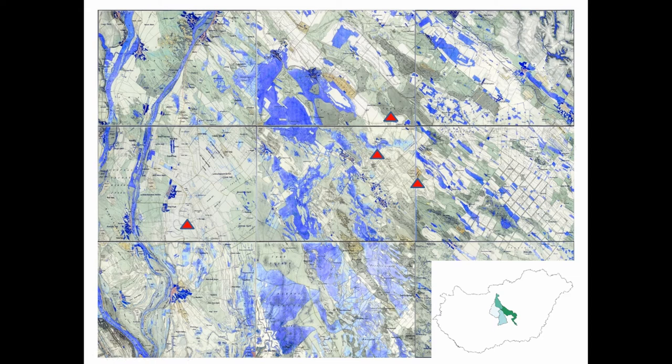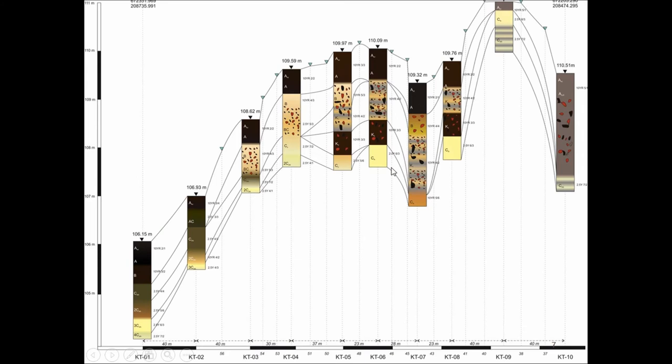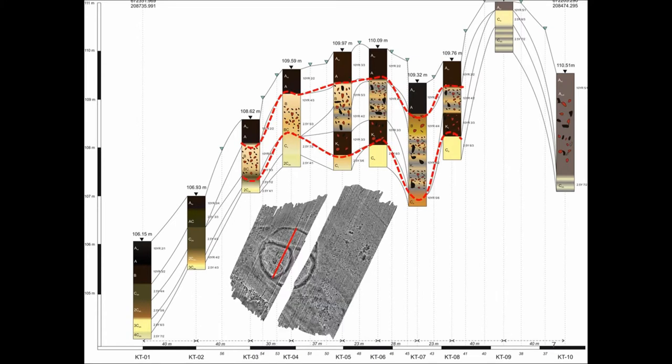First, we are looking at the north-south profile which is crossing the entire site. I would like to draw your attention to this main part of the area. You can see the red line shows where these profiles are, and on the profile sections you can see that there are these complex sediment layers with very high intensity of daub and charcoal and other anthropogenic material content.